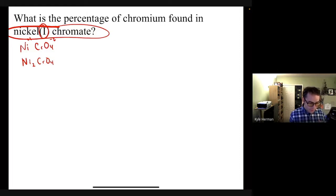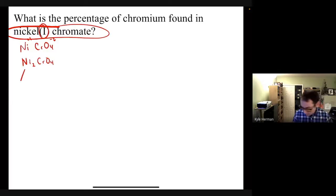Now we need to figure out the percentage of chromium in nickel one chromate. To do that, the first thing we're going to do is figure out the molecular mass of it. So nickel, we need to look at our periodic table and come up with that number. It's 58.69, and there's two of them.